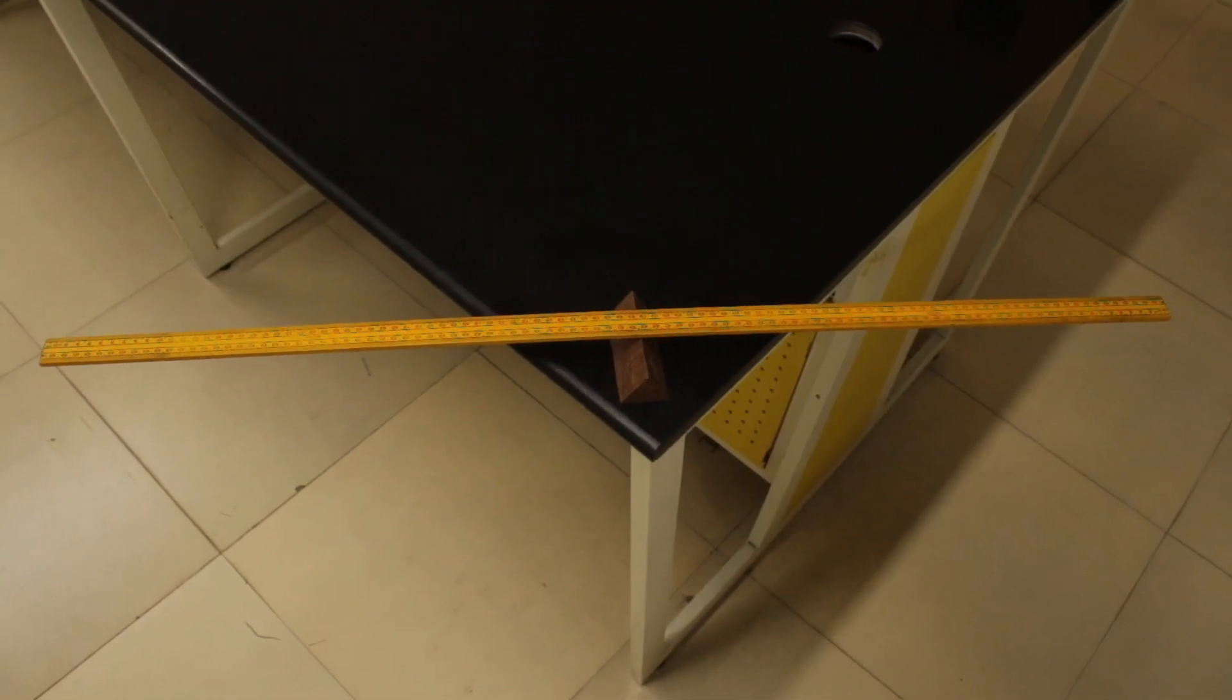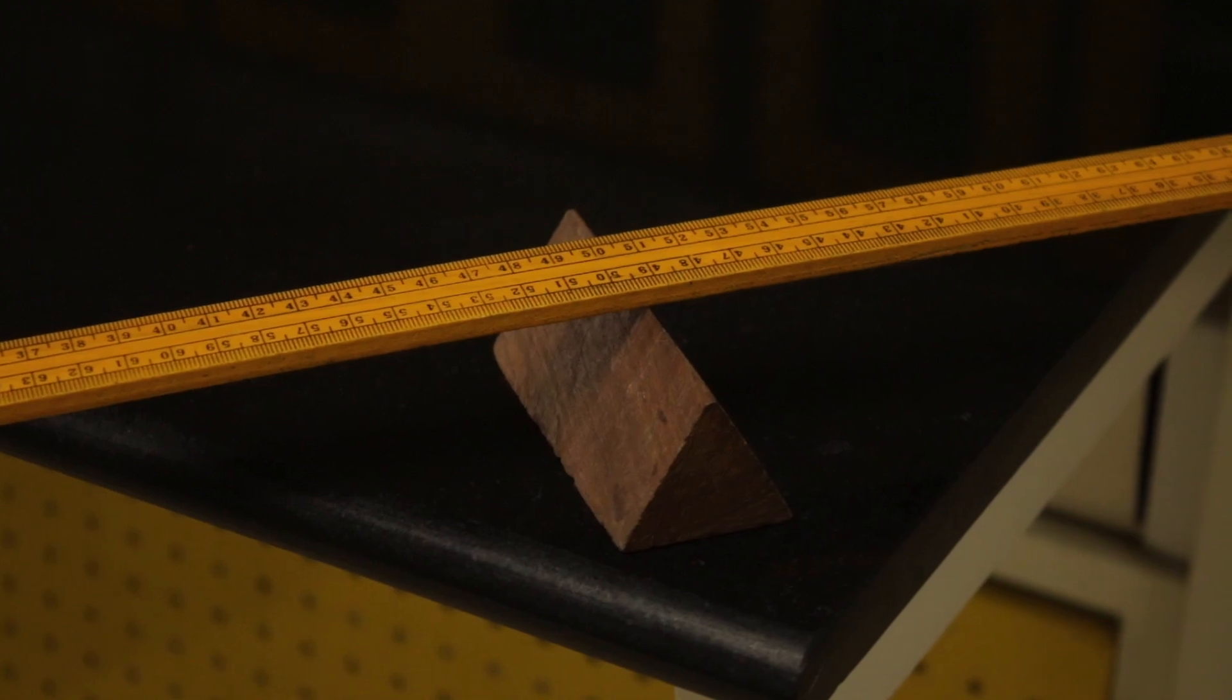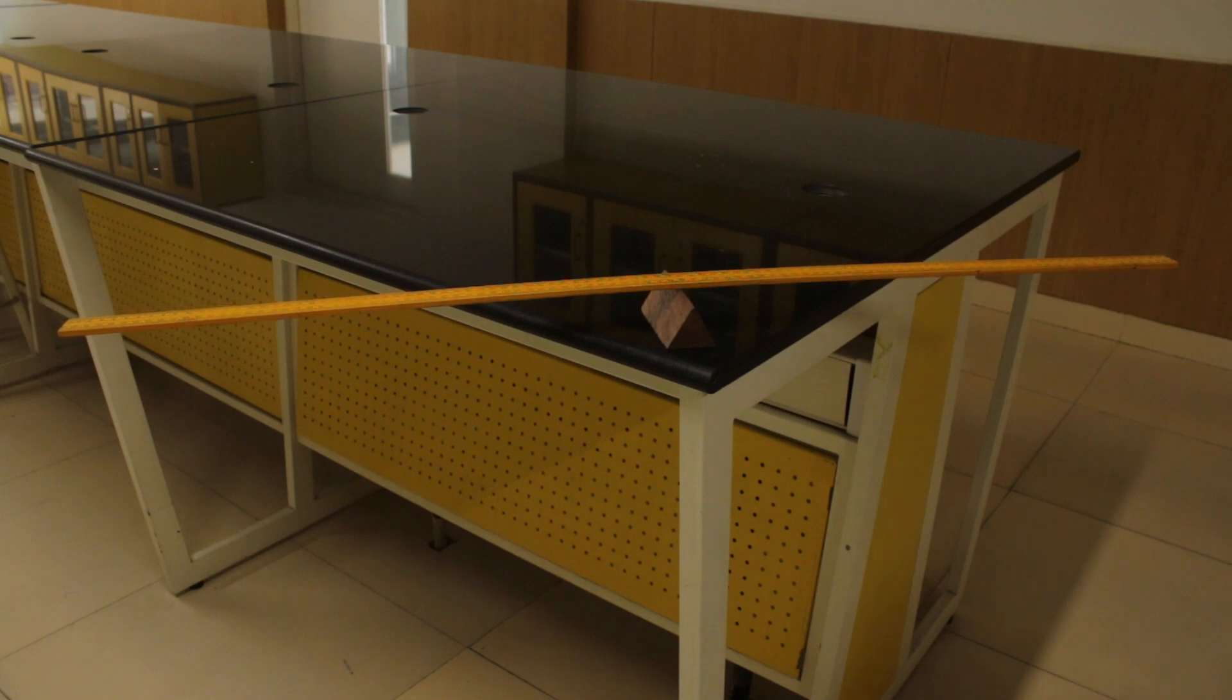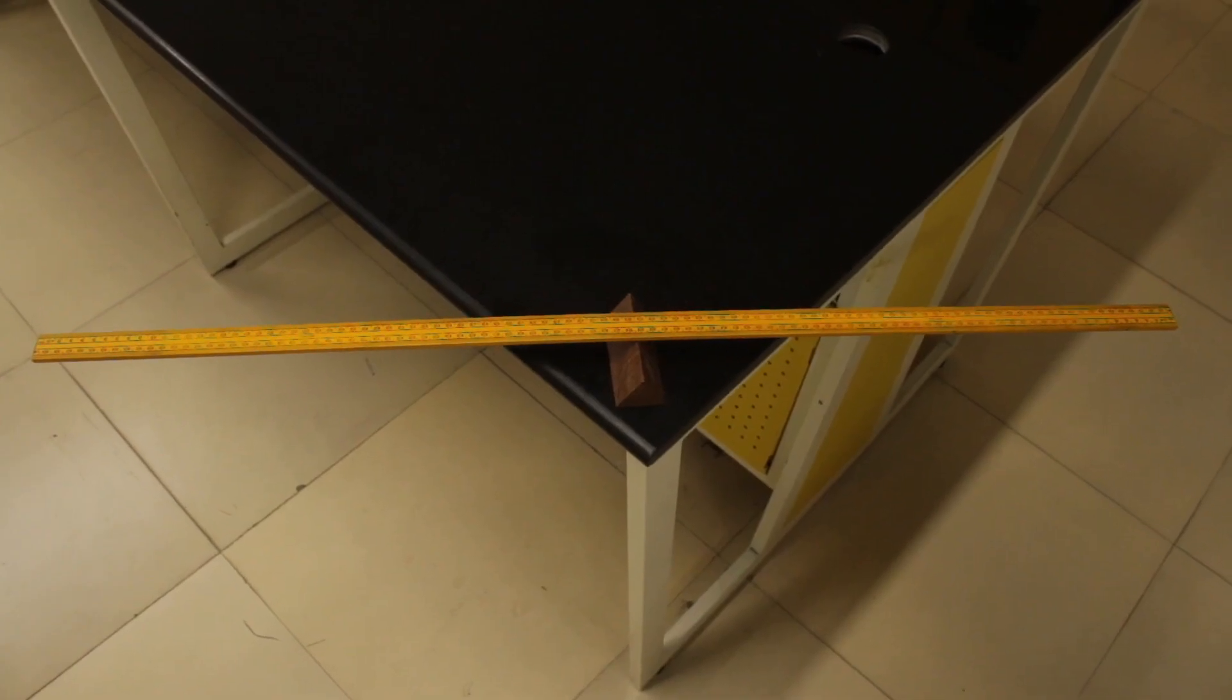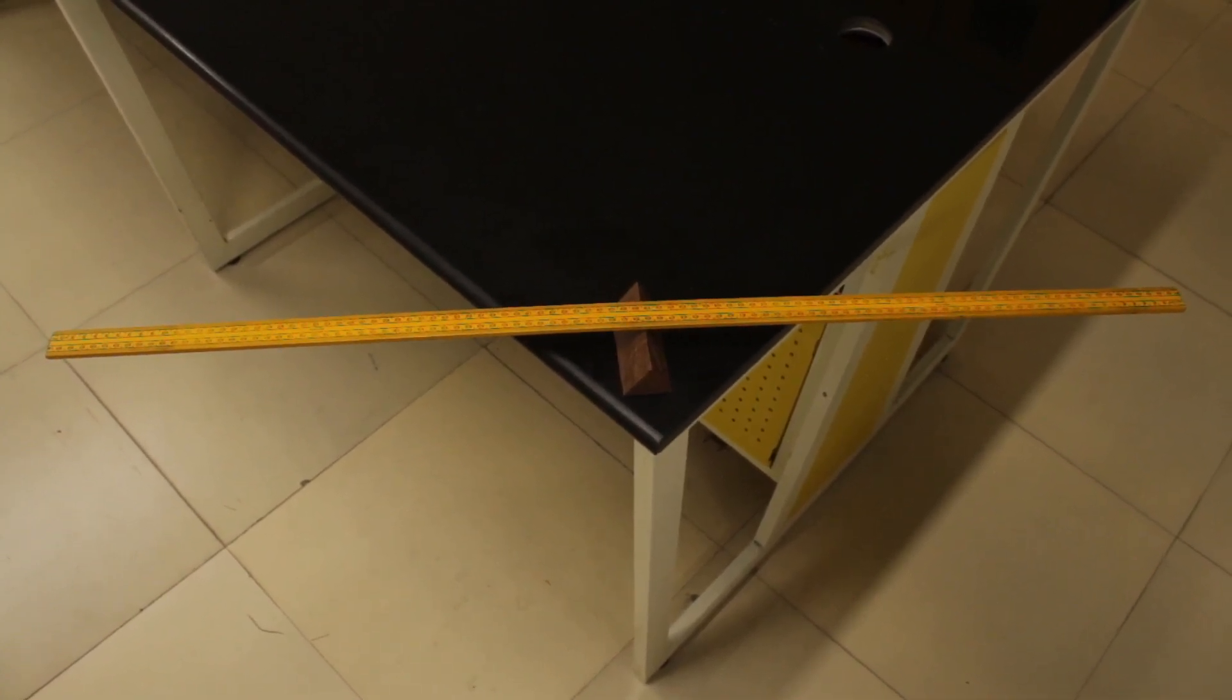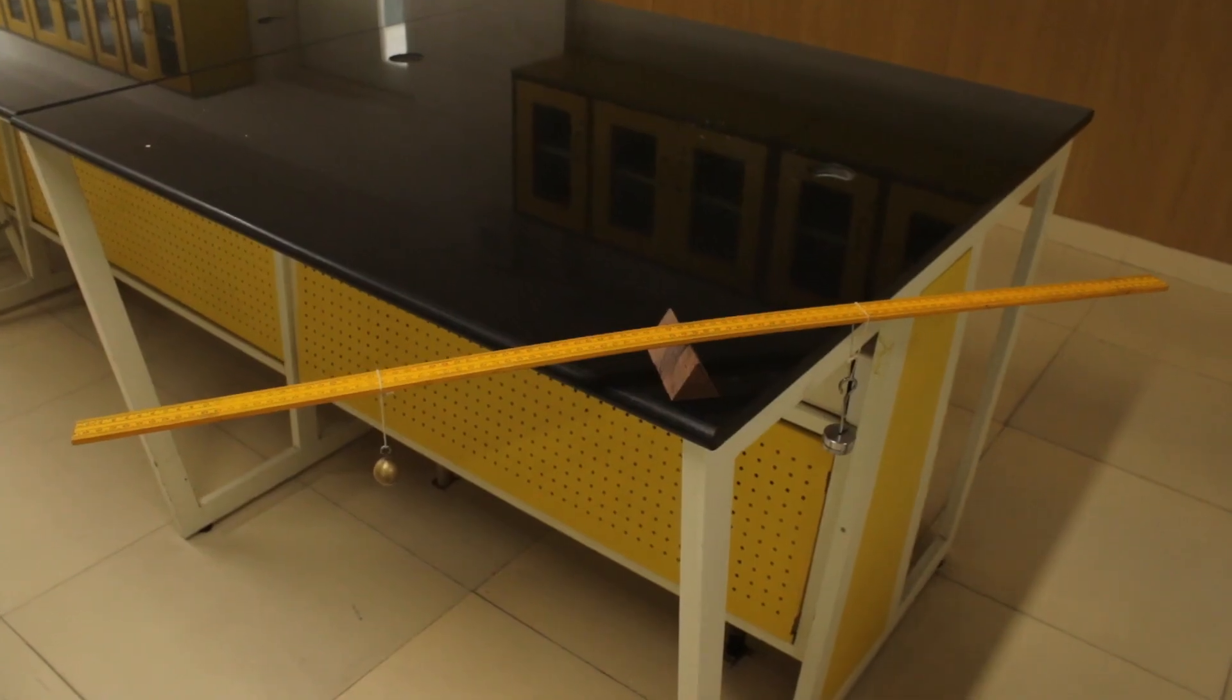As you can see here, the scale is balanced at its center of gravity. The next step is to suspend the slotted weights on one side and the unknown weight on the other side, and adjust their positions till the system comes into equilibrium and the scale is perfectly horizontal. Now the scale is horizontal.